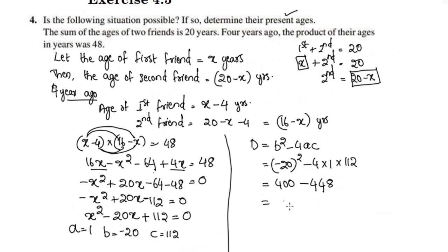This gives 400 minus 448, which is equal to negative 48. So the discriminant is less than 0. Since the discriminant is less than 0, real roots are not possible.